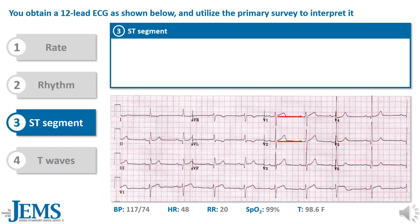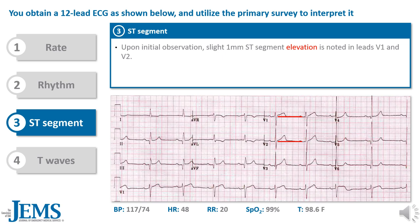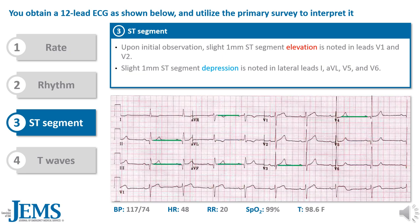Next, let's look at the ST segments. Upon initial observation, slight ST elevation is noted in leads V1 and V2. Slight ST segment depression is noted in lateral leads 1, AVL, V5, and V6. The remaining leads are overall unremarkable for acute ST segment changes.